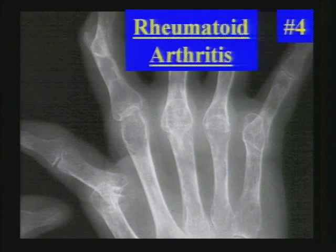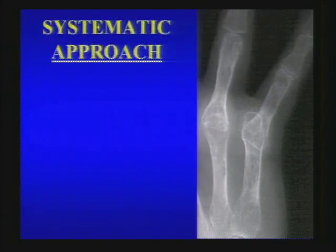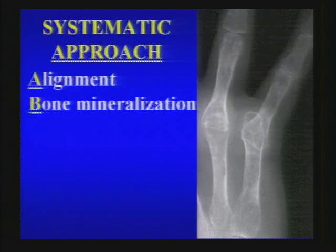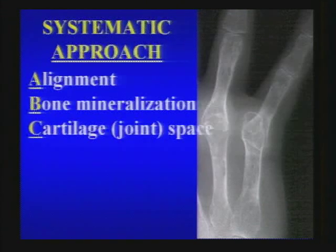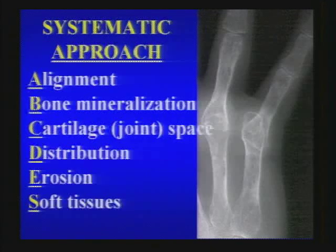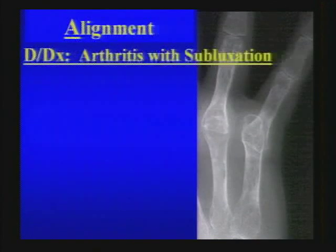The next diagnosis is rheumatoid arthritis. A systematic approach using the ABCs is very helpful — the worst thing is to freeze up on an unknown case. The ABCs: alignment, bone mineralization, and cartilage or joint space. I would add distribution, the presence or absence of certain types of erosions, and analysis of the soft tissues, all of which can be particularly helpful when analyzing an unknown.